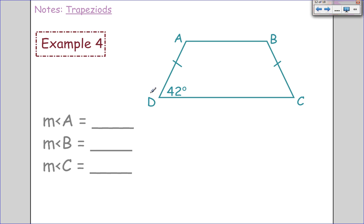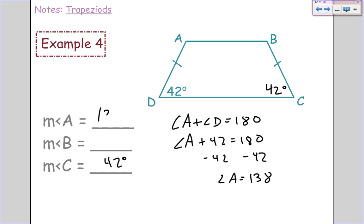Let's try this out. If this is 42 for angle D, then angle C also has to be 42 degrees. Now, these two angles are supplementary, so we know angle A plus angle D has to equal 180 because it's a trapezoid. Angle A we don't know, but we know angle D is 42, so we subtract the 42. Angle A equals 138. And because it's an isosceles trapezoid, angle A and angle B are congruent, so angle B is also 138 degrees.